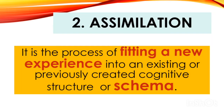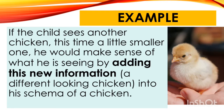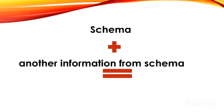The second concept is assimilation. It is the process of fitting a new experience into an existing or previously created cognitive structure or schema. For example, if the child sees another chicken — this time a smaller one — he makes sense of what he sees by adding this new information into his existing schema of a chicken. The child would say that a small chicken is yellow, has a beak but with little wings.